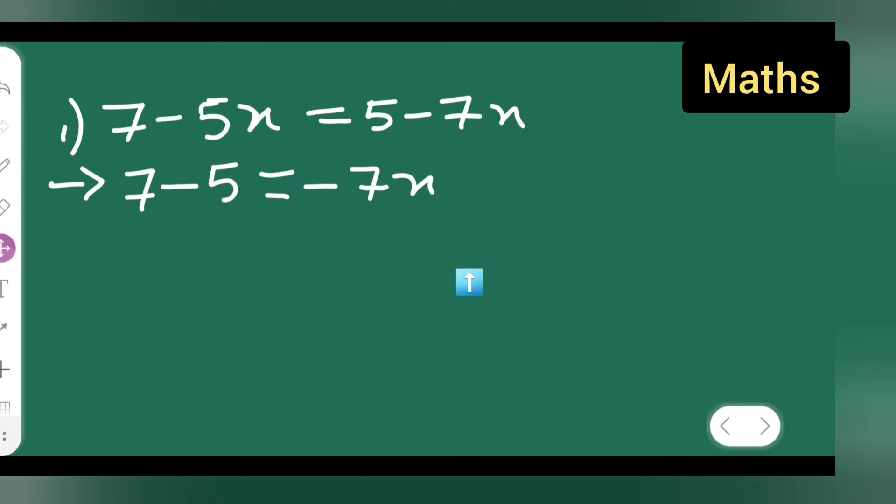What I have done: minus 7x I have kept here. This minus 5x, when I take it to the other side, will become plus 5x. So write down plus 5x.